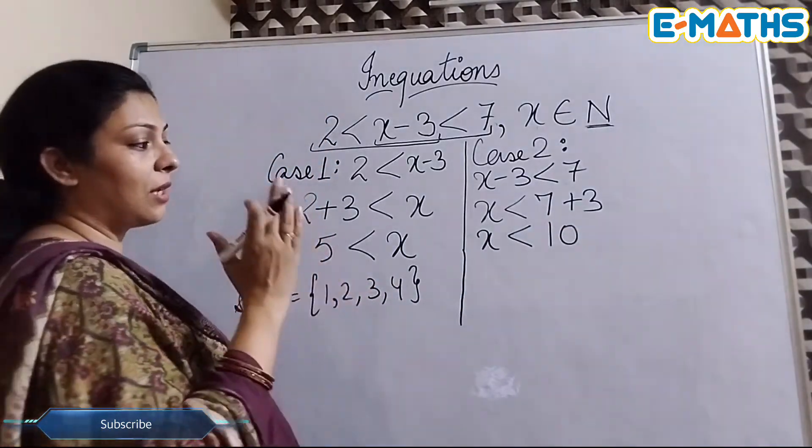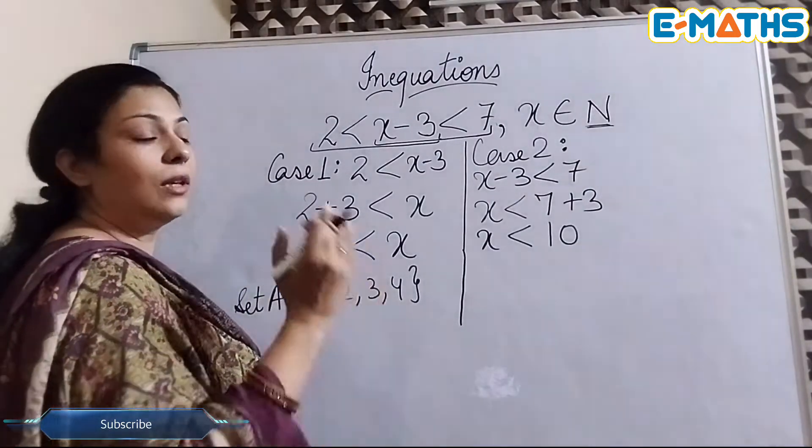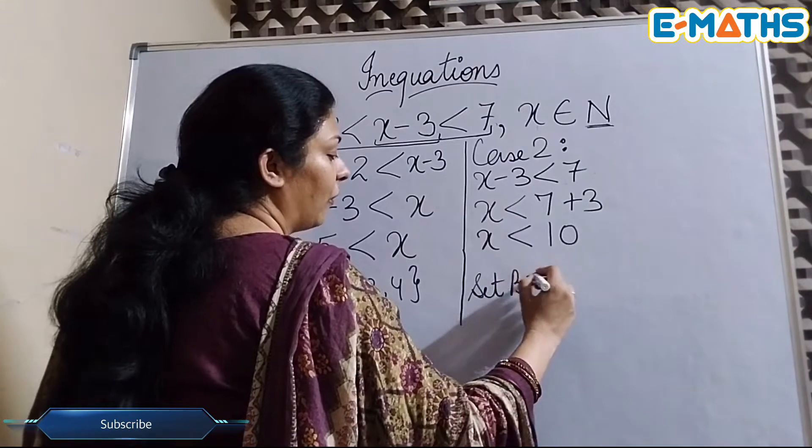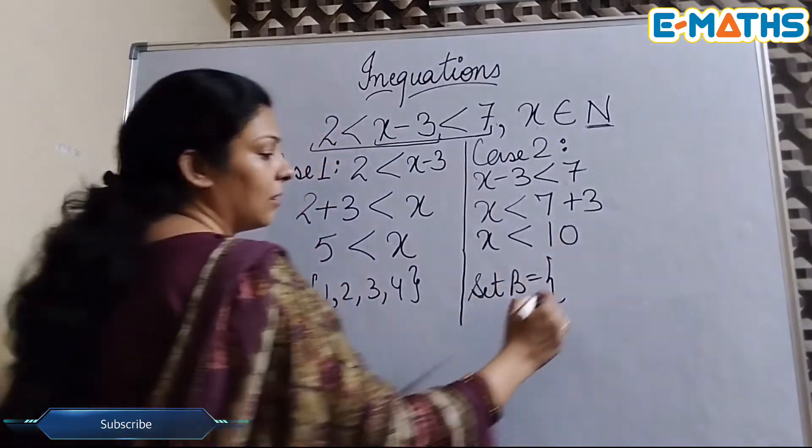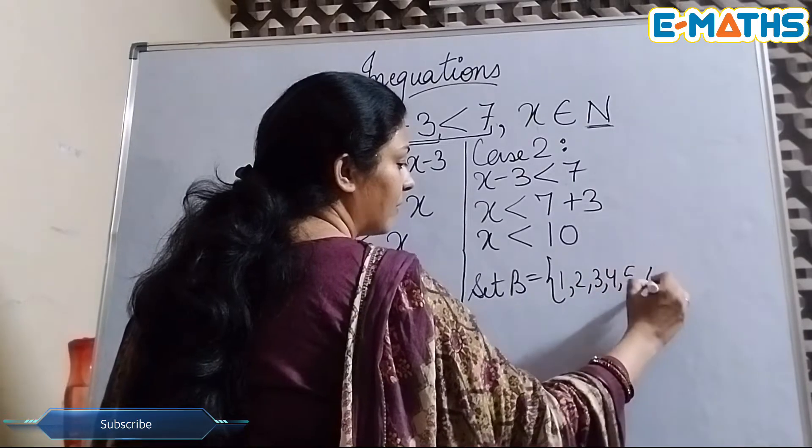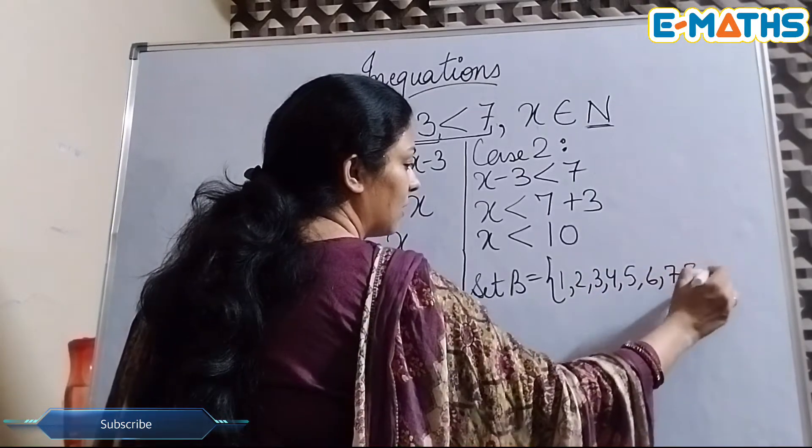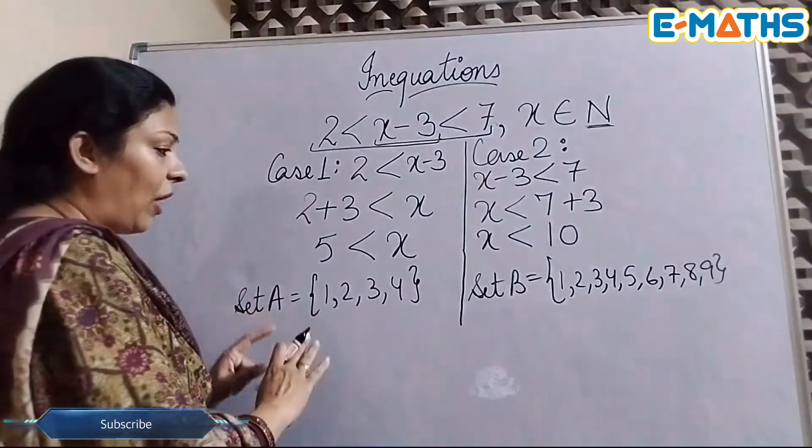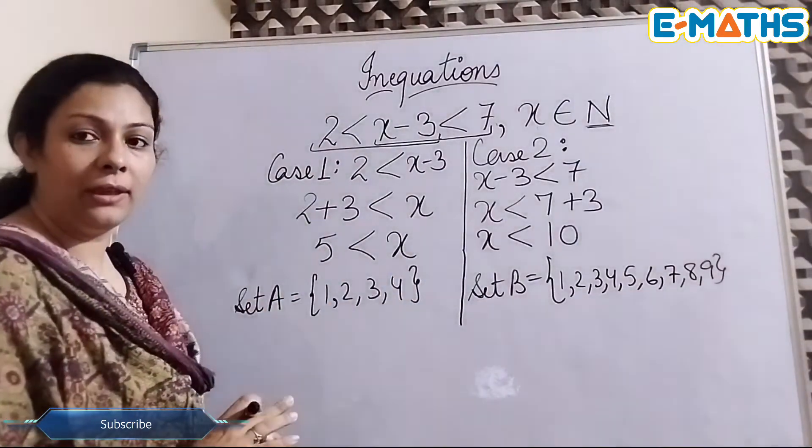So all the numbers starting from 1 to 9 will be taken in this set because the value of x is smaller than 10. We will have 1, 2, 3, 4, 5, 6, 7, 8, and 9. We have found set A. We have found set B.